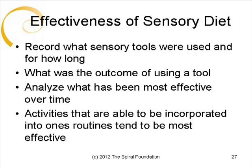When creating a sensory diet, it is important to remember that it is an ongoing trial and error process. To create the most effective sensory diet for a child, you should keep a record of what sensory tools were used and for how long the child used them. The outcome after using the tool is also important and should be recorded, along with an analysis of what tools have been most effective over time. Finally, activities that are incorporated into one's routine tend to be the most effective, so choosing activities that can be easily incorporated into the child's day is important.